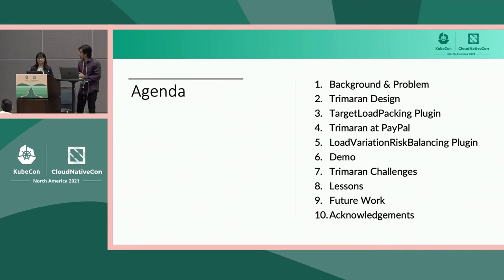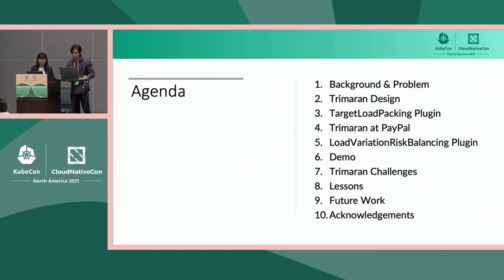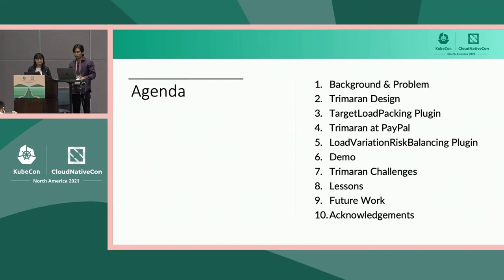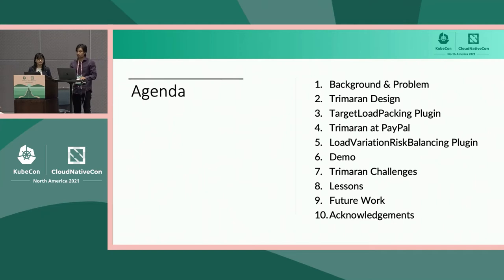This is the agenda for today. We'll go over the motivation, the background, and the problem definition, followed by the Trimoran architecture, the design, and the plugins we contributed to the open source community. The first is the target load packing plugin and the second is the load variation risk balancing plugin. Then we have a demo, some challenges Trimoran faces and how we overcome them, good practices in production, and some future work.